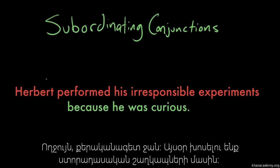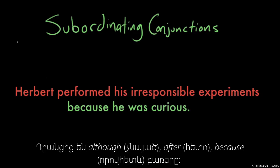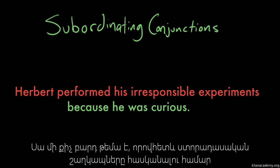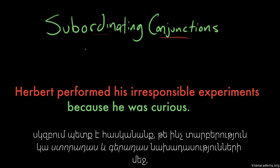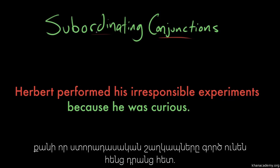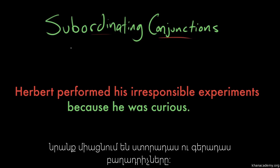Hey, grammarians. Today, let's start talking about subordinating conjunctions, words like although and after and because. This is a pretty complicated topic, because in order to understand subordinating conjunctions, you have to understand the difference between an independent and a dependent clause, because that's what subordinating conjunctions do — they unite independent and dependent clauses.